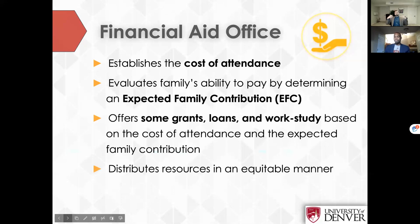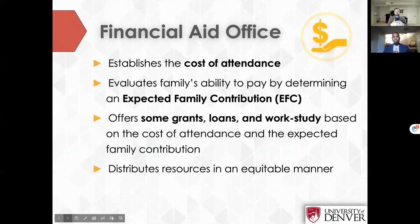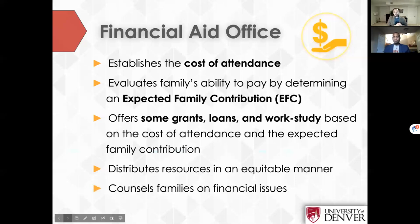The Office of Financial Aid handles federal aid — things that come from federal or state funds rather than the University of Denver directly. They process a lot of the documentation. They establish the cost of attendance to attend DU as an undergraduate student, evaluate each family's ability to pay by determining the expected family contribution, offer grants, loans, and work study based on that cost of attendance and expected family contribution, and distribute resources in an equitable manner.